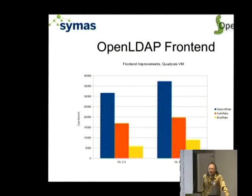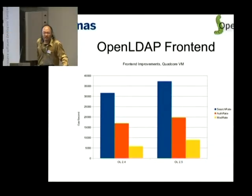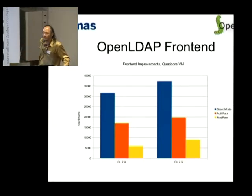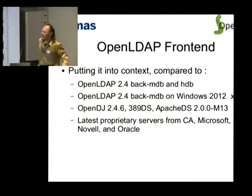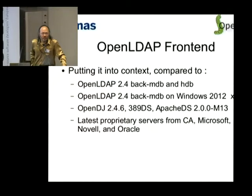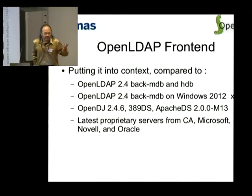To give you an idea of how these front-end changes have affected things: on the left is the current OpenLDAP 2.4, and on the right is the 2.5 code that's in Git. The blue column is search rate, orange is authentication rate, and yellow is modification rate. You can see there's just about a straight 20% performance boost all across the board. And to put these numbers into context — since 2005, OpenLDAP is the world's fastest LDAP server, and that's nine years running now.